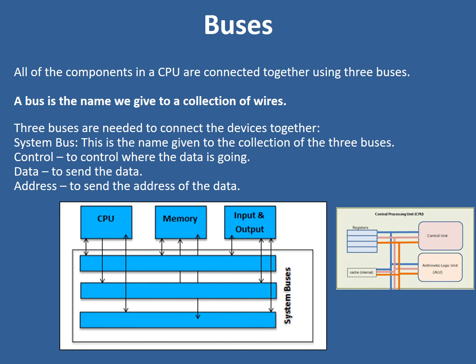The first bus, the control bus, is used to control where data is going. The data bus actually carries data to and from our registers to memory. The address bus sends the address of where to get data or instructions from, usually from RAM.